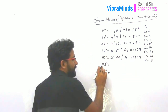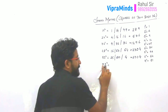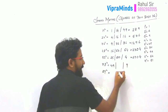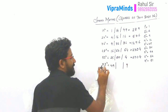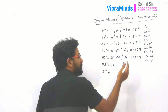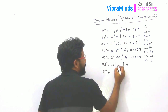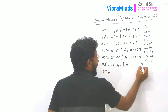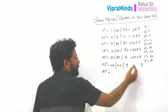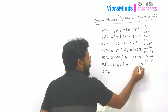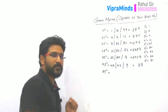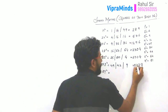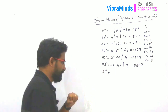Next is 73 squared. 7 squared is 49. 3 squared is 9. 7 into 3 is 21, and the double of 21 is 42. The right block is a single digit, so write 9 as it is. From 42, write 2 and carry forward 4. So 49 plus 4 is 53. The answer will be 5329.